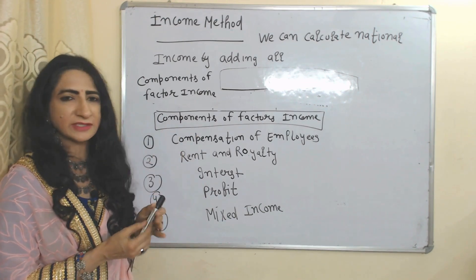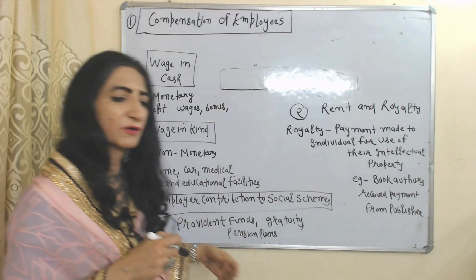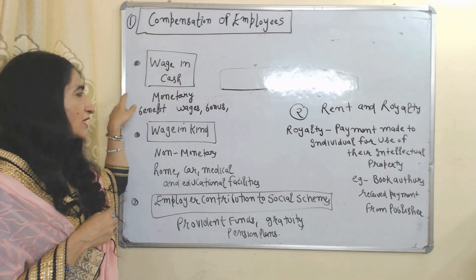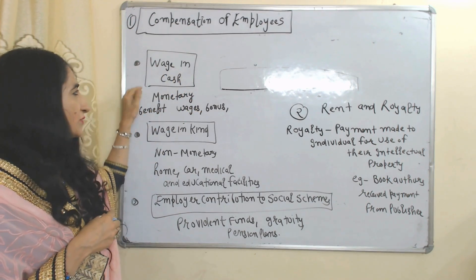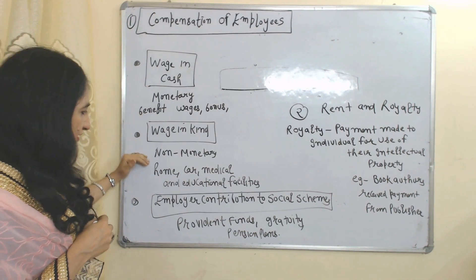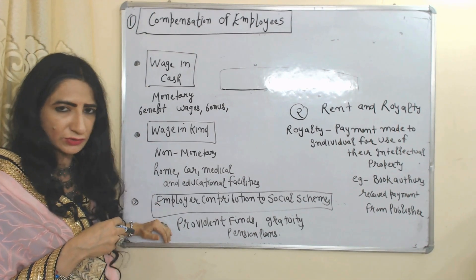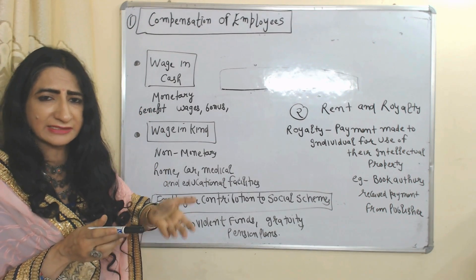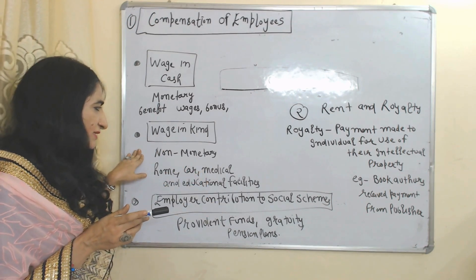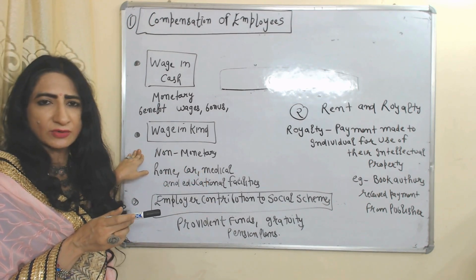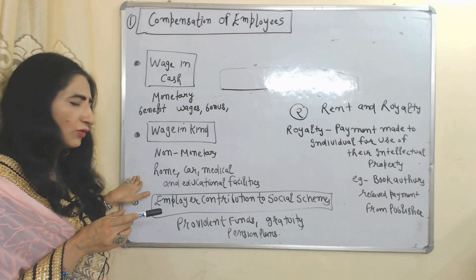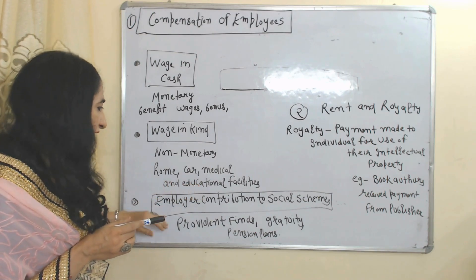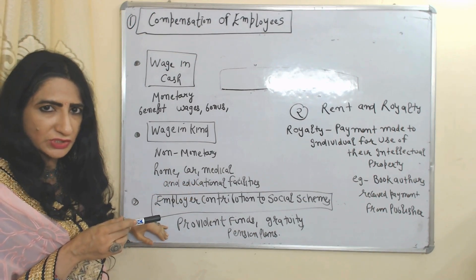The first component of factor income is compensation of employees. Compensation of employees includes wage in cash, wage in kind, and employer contribution to social schemes. Wage in cash includes all monetary benefits like salary and bonus. Wage in kind includes non-monetary benefits like home, car, medical, and education facilities.